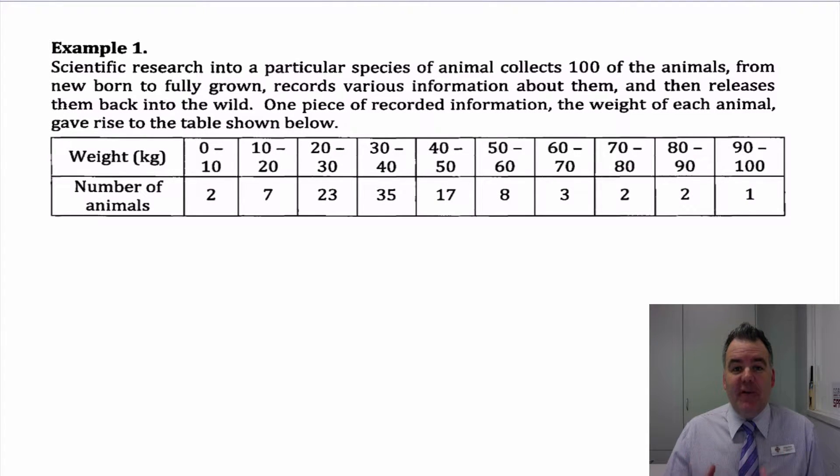So let's have a look at this first example here, where we've just got simple weights of a number of animals. So we've got 100 animals and we've put them all in this table here and we've grouped them according to 10 kilo increments. Now you might want to change those increments, in which case the graph would look a little bit different and this would change. But given as it is now, we've got weights of animals from 0 kilos up to 100 kilos. We've got 100 animals.